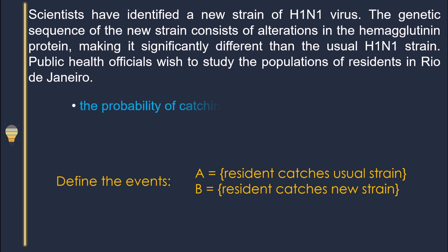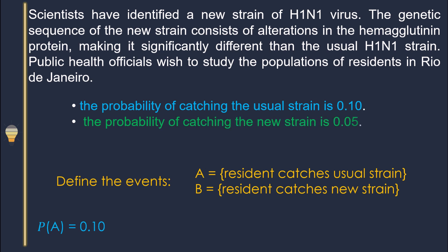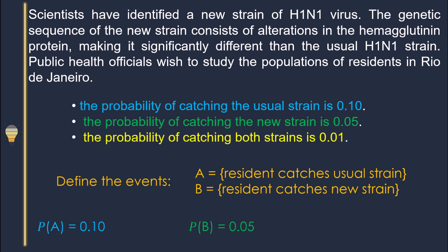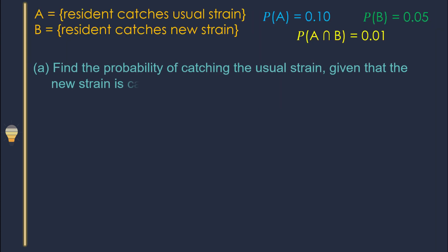Now let me write down the given probabilities. The probability of catching the usual strain — that means probability of A — is 0.10. The probability of B, the new strain, is 0.05. The last part: the probability of catching both strains, meaning A intersection B, is 0.01.